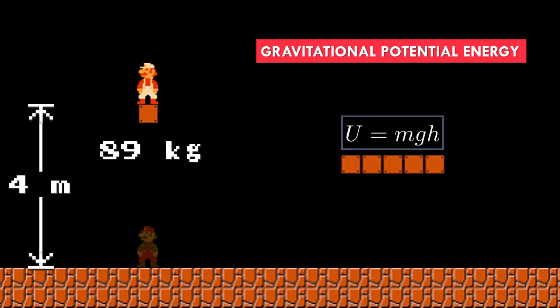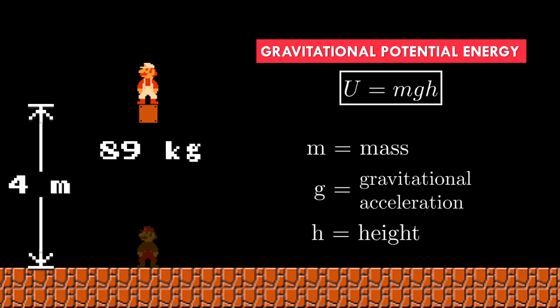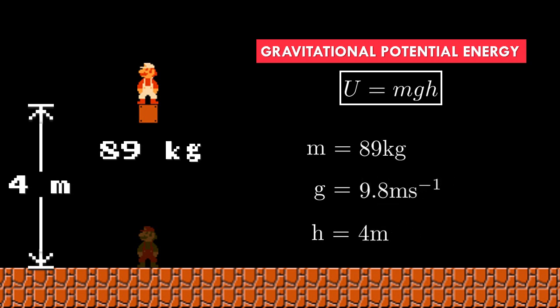It's perfectly fine if you don't remember that — I'll just gloss over what every symbol means. Gravitational potential energy is measured by multiplying the object's mass m, gravitational acceleration g, and height h, which we measure from the ground. For our purpose, m would be 89 kilograms, h would be 4 meters, and g would be 9.8 meters per second squared. Gravitational acceleration g just means how much a freely falling object speeds up every second — it's roughly 9.8 meters per second squared anywhere in our world.